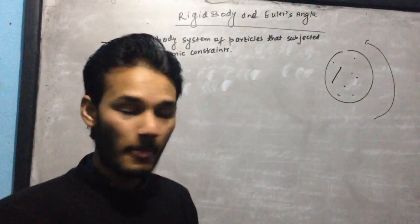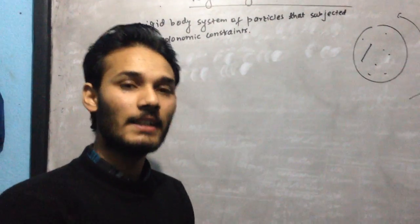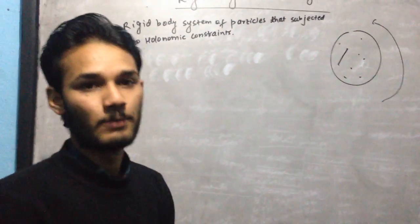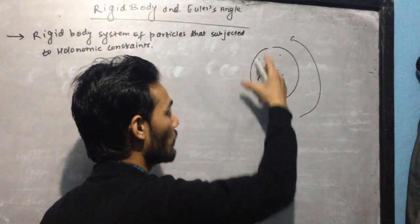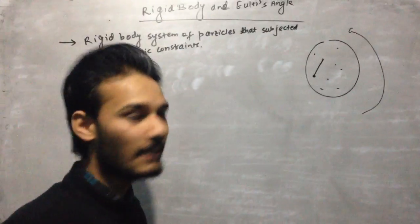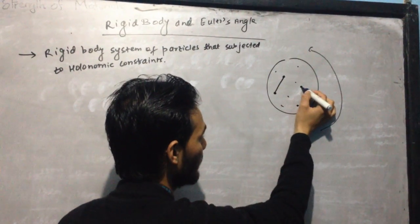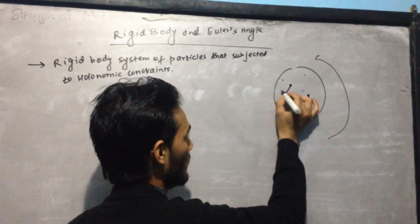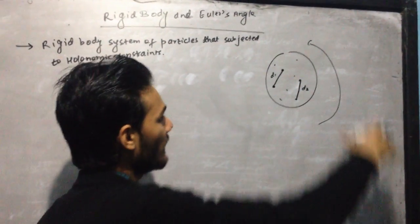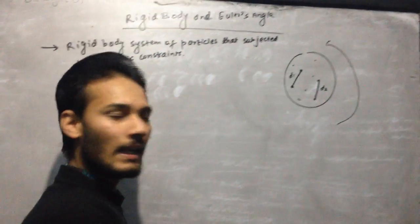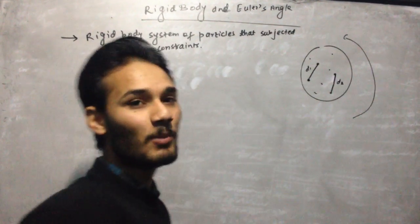We are going to discuss the rigid body and Euler's angles. First of all, we should know what is a rigid body and what criteria are required. A rigid body is any body containing a large number of particles. Suppose this is one particle and this is another particle, with distances d1 and d2 between them. If you rotate this body in any direction — clockwise or anticlockwise — and the interparticle distance remains the same, then this body is a rigid body.